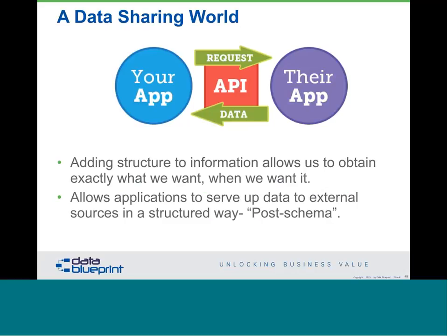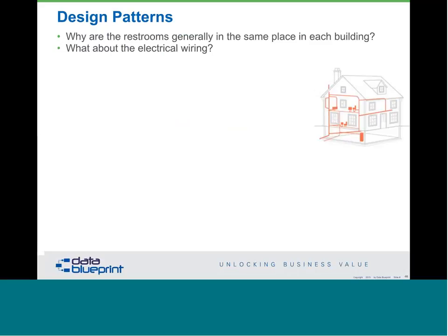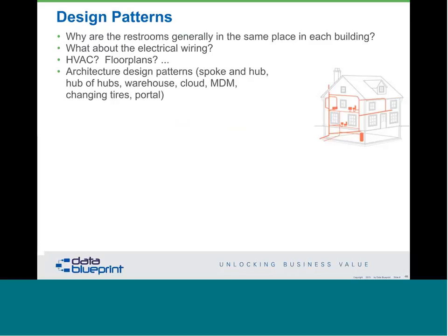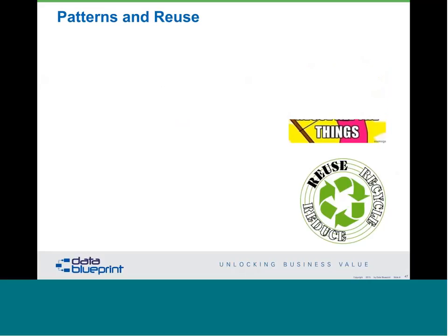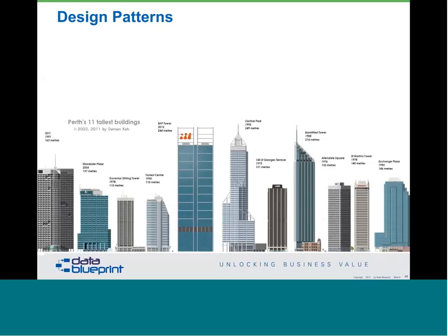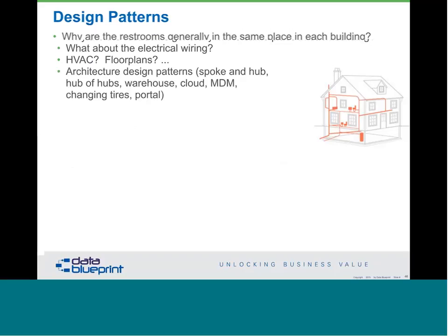Agile gives us the ability to share data across different enterprises and applications. The real question is are we doing any less sharing in today's environment? The answer is no — we're doing more sharing. There are a lot of design patterns you can use. Restrooms generally occur in the same place in every building because it's cheaper — you don't want to run pipe into everybody's building. You do the same for electrical wiring and HVAC. These design patterns exist in data as well — the idea being to build with the least overhead possible.